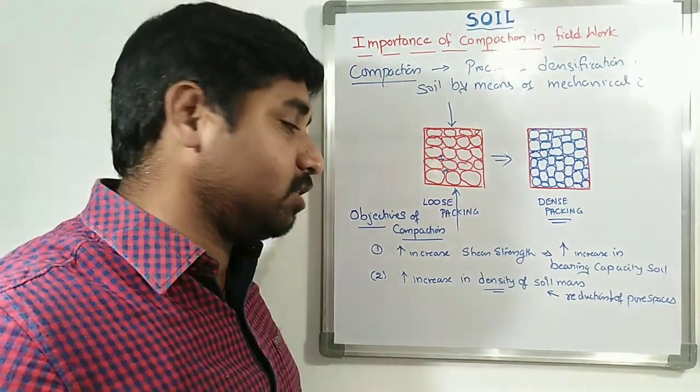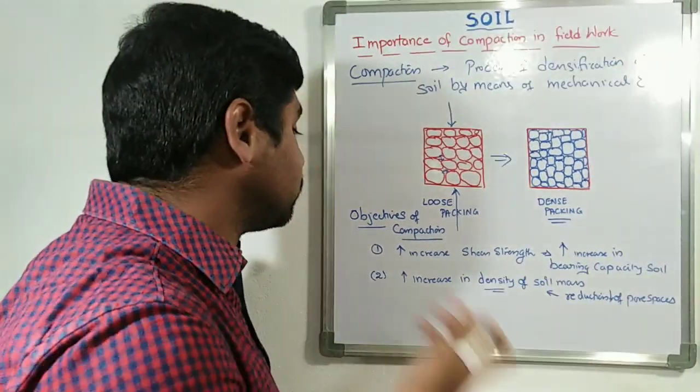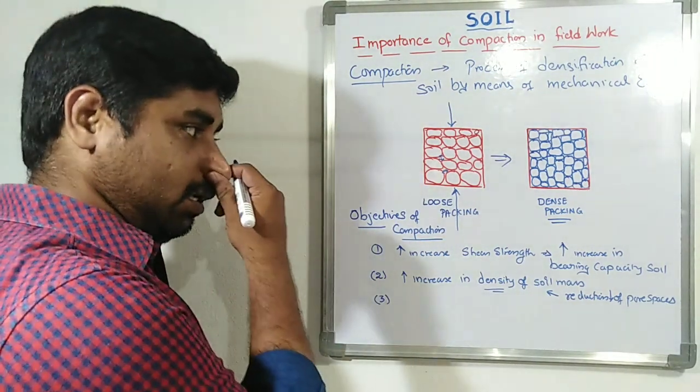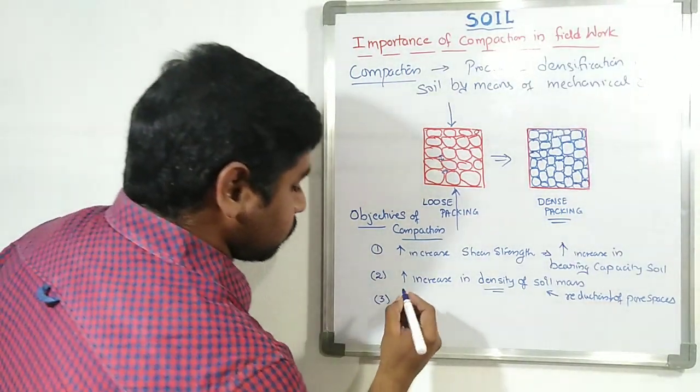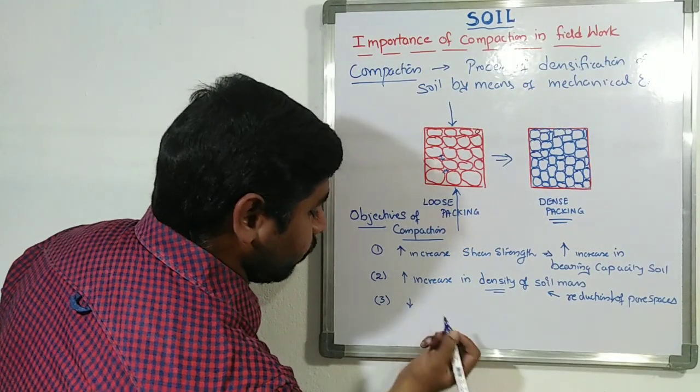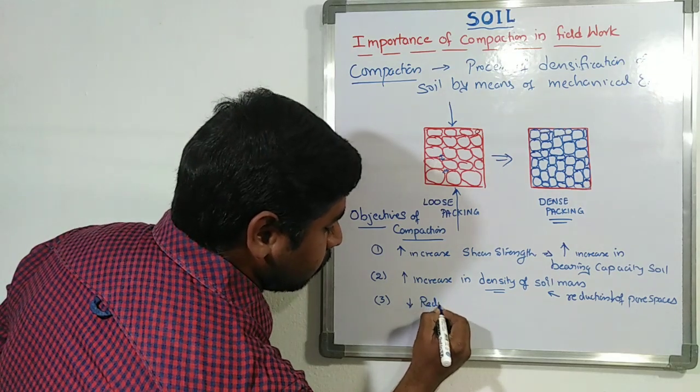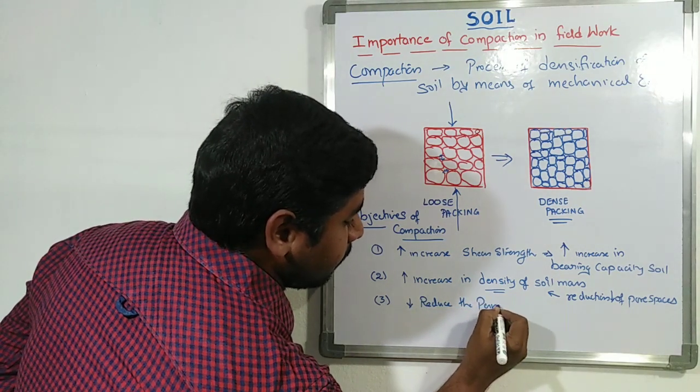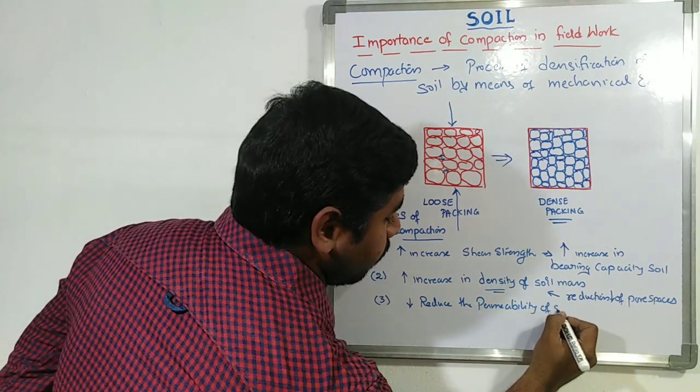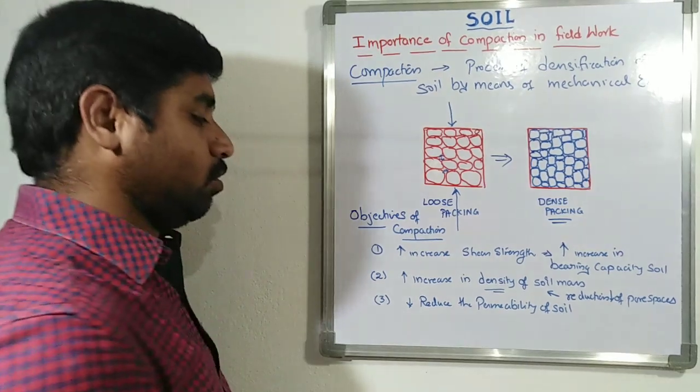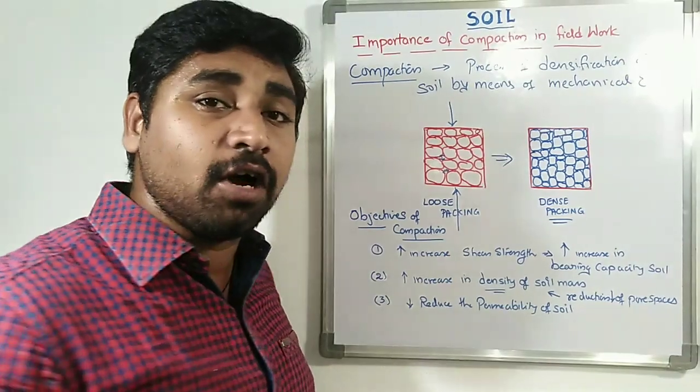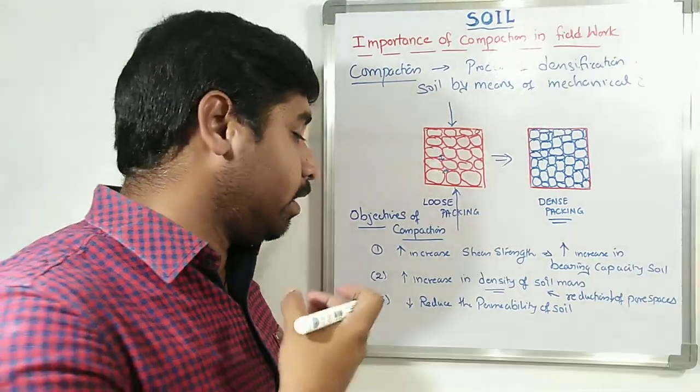Soil density is going to be increased because of this compaction. And third one, to reduce the permeability of soil. So when you are laying an embankment, the permeability of soil is very much important.